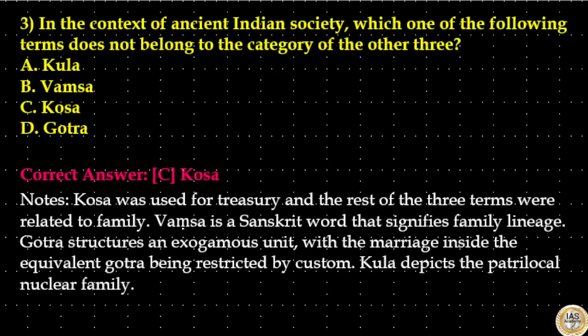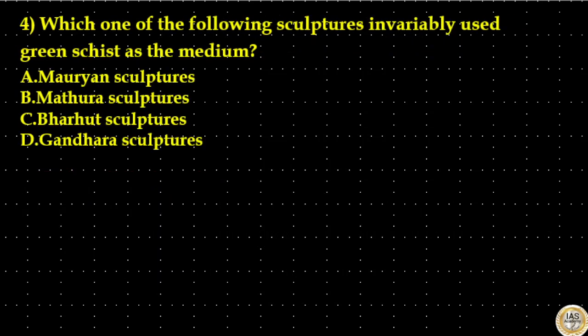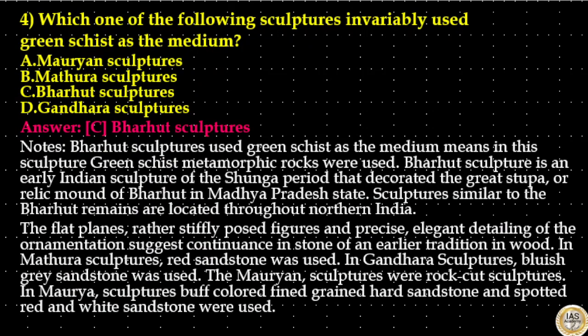Which one of the following sculptures invariably used green schist as the medium? Options are: Mauryan sculptures, Mathura sculptures, Bharhut sculptures, and Gandhara sculptures. The answer is option C: Bharhut sculptures. Bharhut sculptures used green schist as the medium — meaning metamorphic green schist rocks were used. Bharhut sculpture is an early Indian sculpture of the Shunga period that decorated the great stupa or relic mound of Bharhut in Madhya Pradesh state.